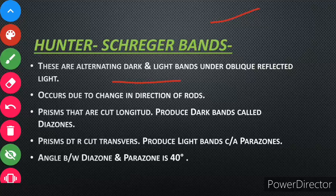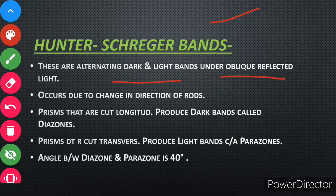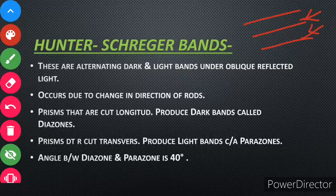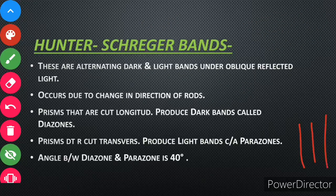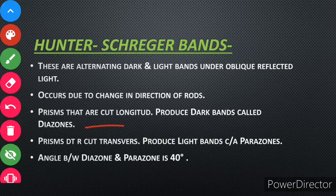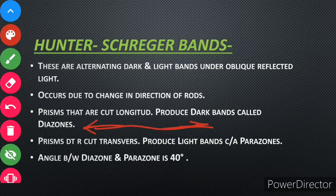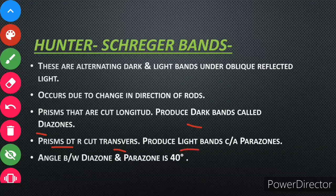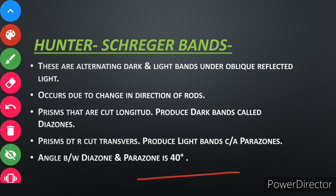Next is Hunter-Schreger Bands. These are alternating dark and light bands seen under oblique reflected light. They occur due to the changing direction of the rods. Prisms that are cut longitudinally produce dark bands called diazones. Prisms that are cut transversely produce light bands called parazones. The angle between a diazone and a parazone is 40 degrees.